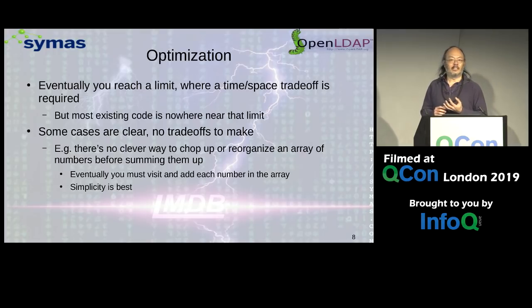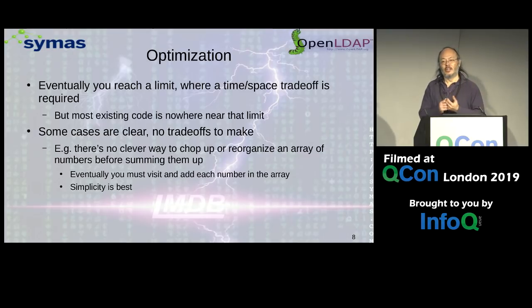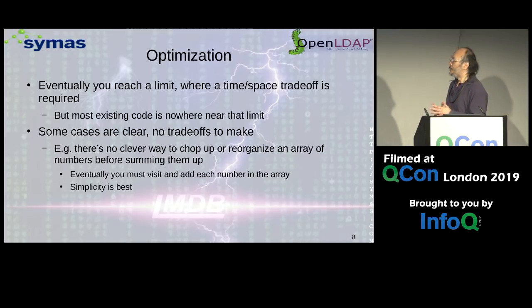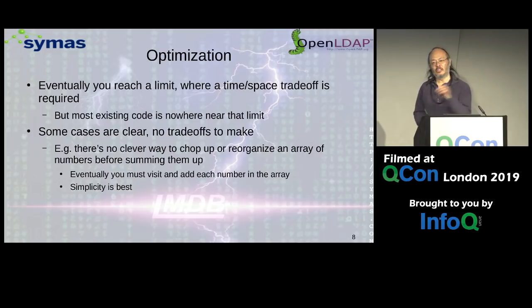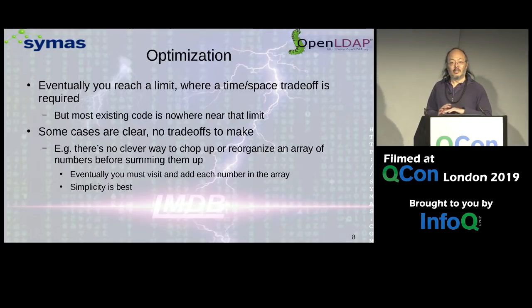As you go along, eventually you hit a limit and get to diminishing returns — every decision where you gain something, you also lose something else. The trade-offs start to add up. But if you look across the industry, most of the code is nowhere near that limit. Most of the code you see can easily slash a huge amount of what it's doing without affecting any losses.